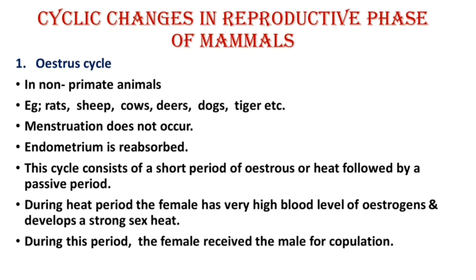In these animals, there is no menstruation. The endometrium, which is the lining of the uterus, is reabsorbed. In human beings, the uterus has this lining called the endometrium, which leads to the menstrual cycle. The menstruation period involves shedding of this lining.